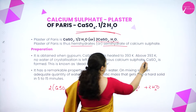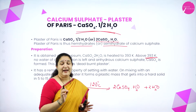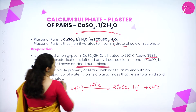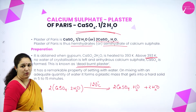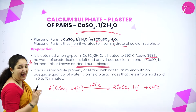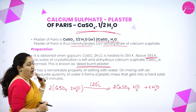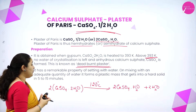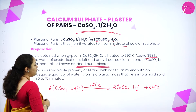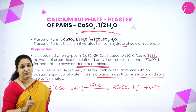Above 393 Kelvin, all water of hydration is removed and it forms anhydrous calcium sulfate, known as dead burnt plaster. Plaster of Paris has the property of setting with water very fast — on mixing with an adequate quantity of water, it forms a plastic mass that hardens within 5 to 15 minutes.